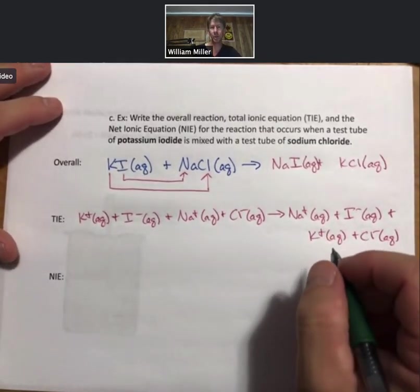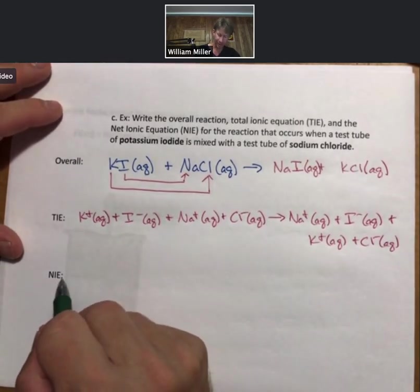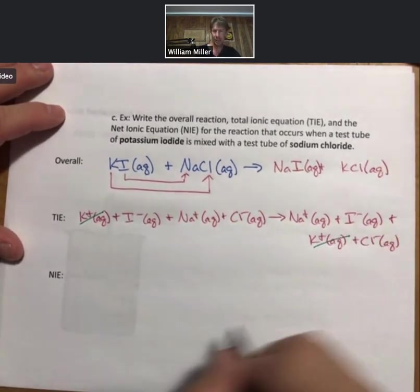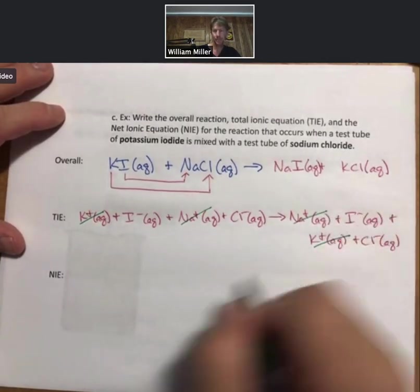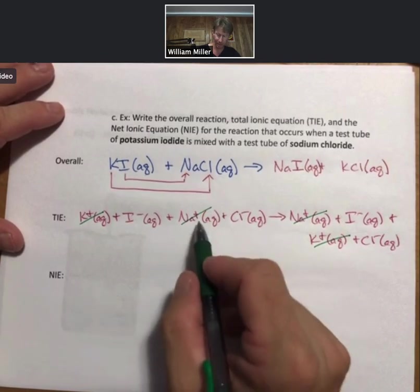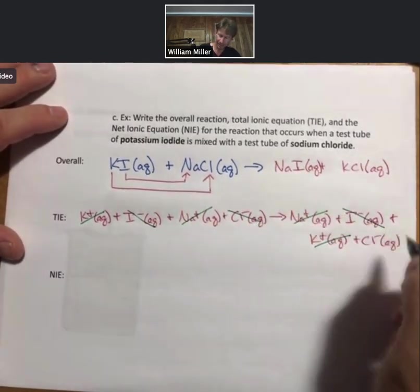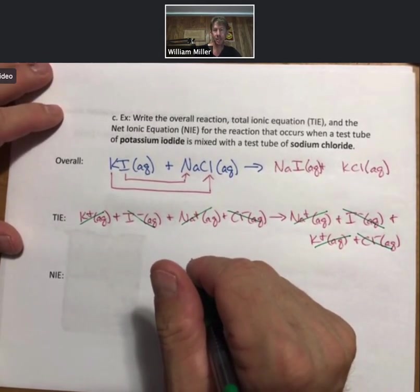And when we do our spectator ions for NIE, we cross things out. Cross out K+. Na+, also a spectator. Exactly the same formula and charge on each side. Same thing for iodide. Same thing for chloride. There's nothing left.